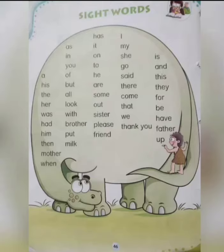Main aapko pehle read karke batathi hoon ki kaunse ye sight words hote hai. First, hamara hai: a — a ko haem 'a' bolte hai. His, the, her, was, had, him, then.